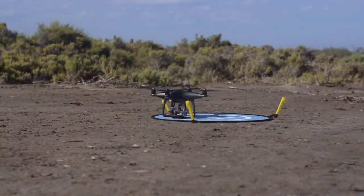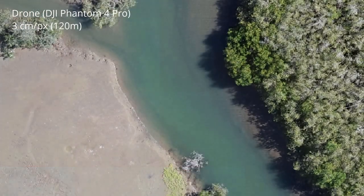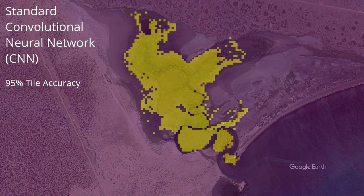We have deployed drones to take over 10 terabytes worth of mangrove images, which are much higher resolution than that of standard satellite images, to create very detailed mangrove maps. This high-resolution imagery has allowed us to take advantage of deep learning and convolutional neural networks to achieve accurate mangrove classifications.